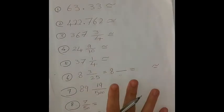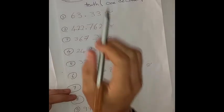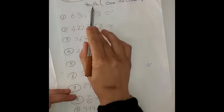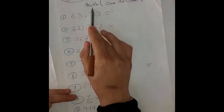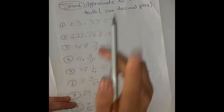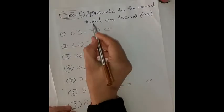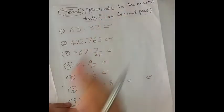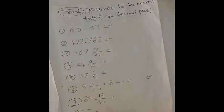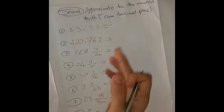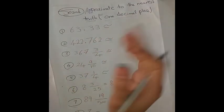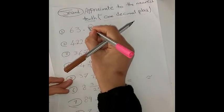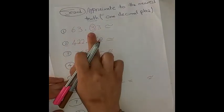Let's see the second part of our lesson: approximation to the nearest tenth. Approximation to the nearest tenth means approximation to one decimal place — both terms mean the same thing. The tenth place is the first digit after the decimal point.